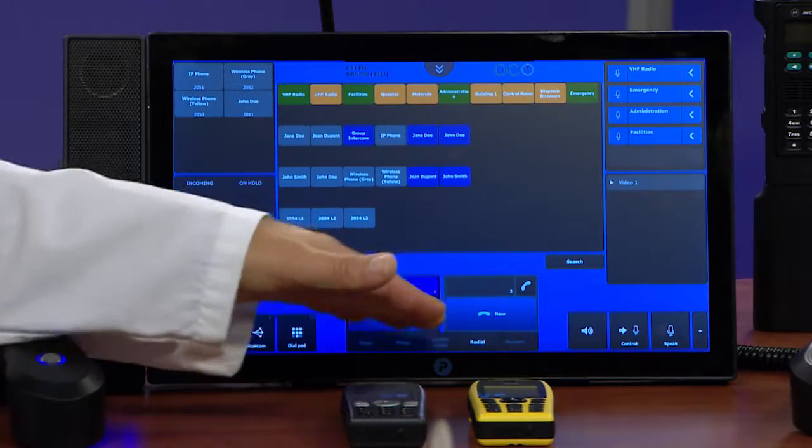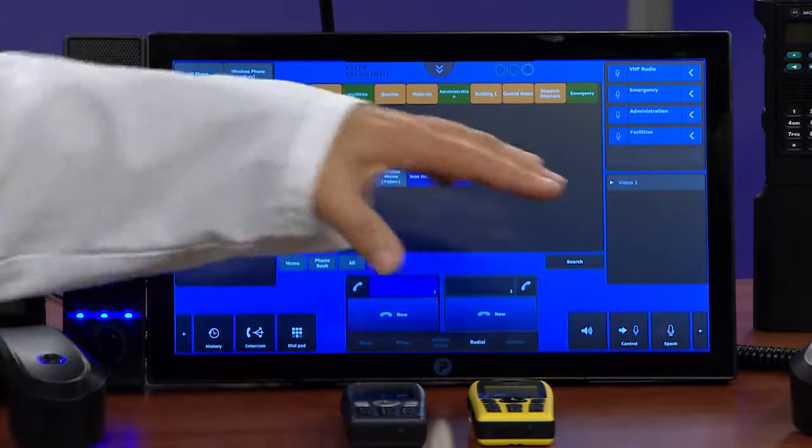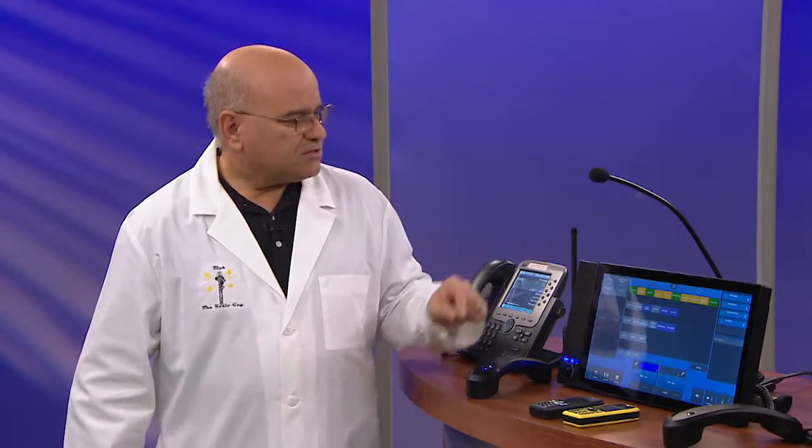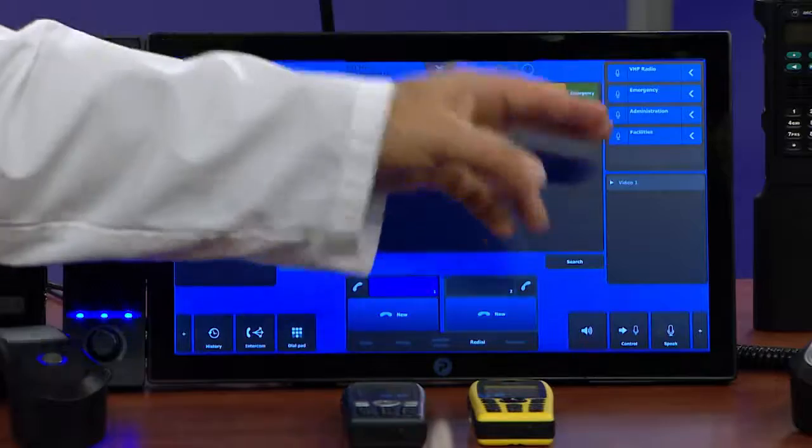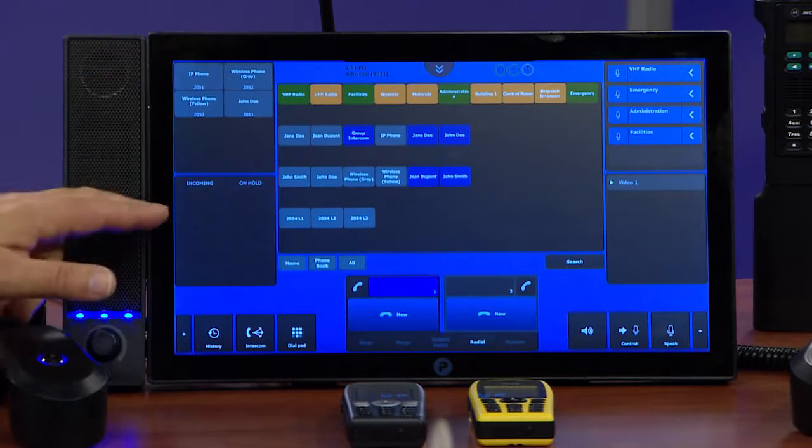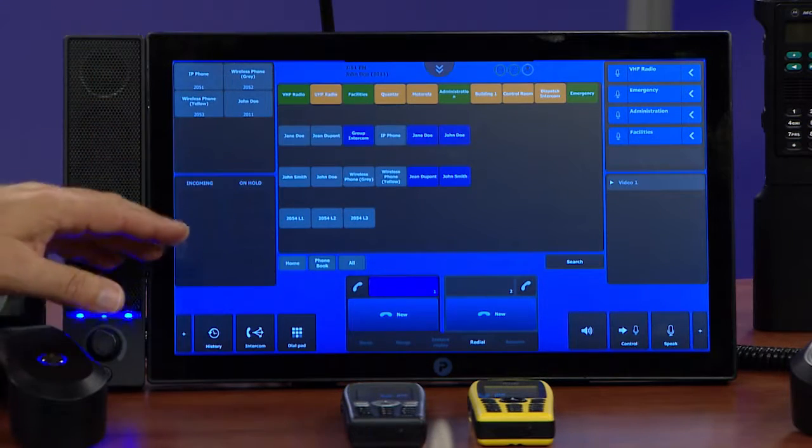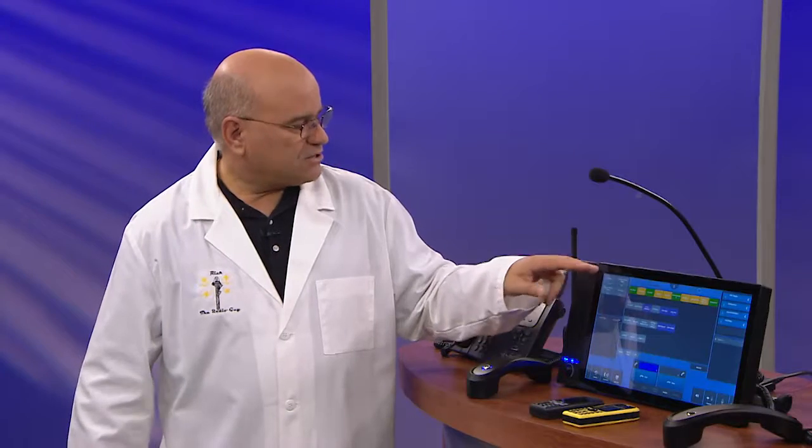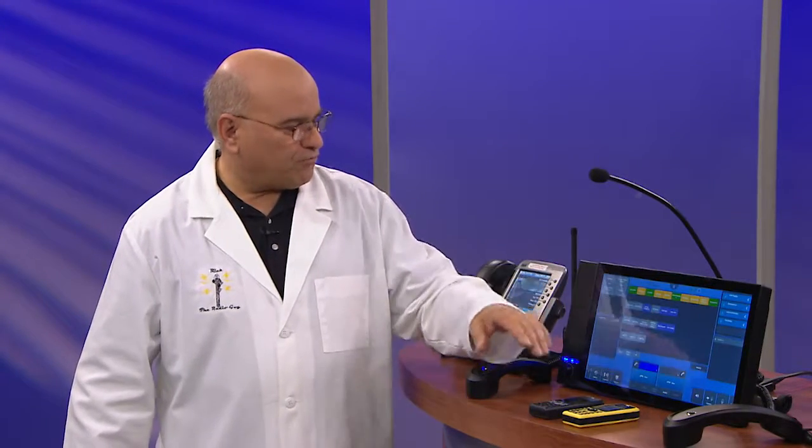These areas down here on the bottom are always the same for the phones and the call control, but these are completely customizable. So here I have my radio slots. Over here I have my incoming lines and I can see incoming calls, calls on hold, calls in queue.